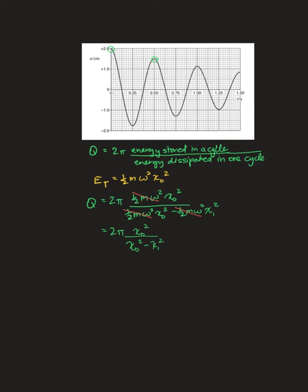Let's substitute in some data from our graph. X knot equals 2 centimeters, while X1 would be 1.5 centimeters. So when I put that in my calculator, I get around 14. So let's look at the graph. What do you think? Does it look like it would stop oscillating in around 14 complete cycles? Not a bad estimate.